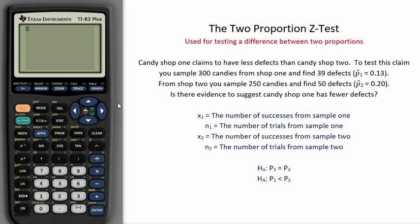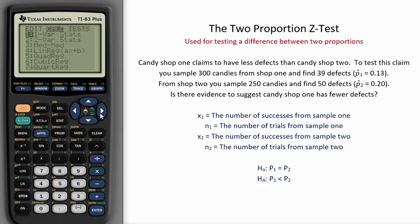The Two Proportion Z-Test is used for testing a difference between two proportions. To find it on the TI Calculator, go to STAT, Tests, and then down to number 6, which is the Two Proportion Z-Test.